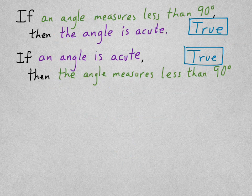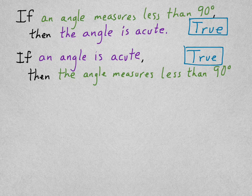So here's the statements we just looked at. If an angle measures less than 90 degrees, then it's acute. And if an angle is acute, then it measures less than 90 degrees. Both of those are true. So I can write it as a biconditional statement.